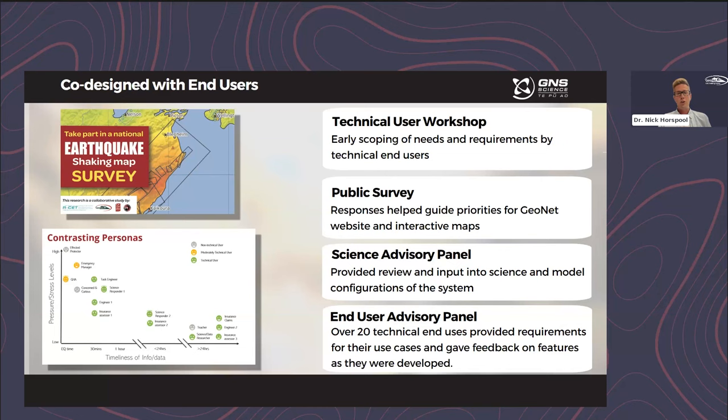One of the key components to this project was developing what we call personas — different types of end users. Through our workshops, surveys, and advisory panels, we developed personas that represent typical end users, and we developed features and user stories for them. For example, we could look at someone like an engineer and see that they wanted information rapidly within the first 30 minutes, with a high requirement for accurate information in that time, and that helped guide what features we need within the Shaking Layers tool.